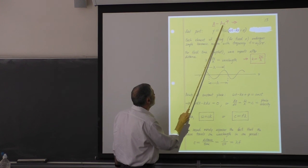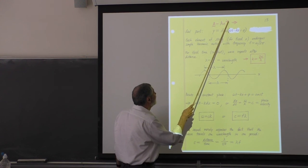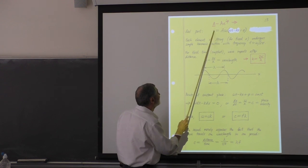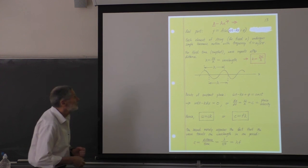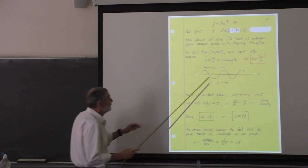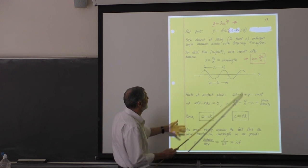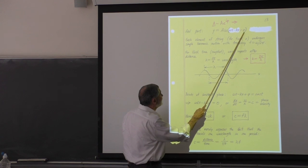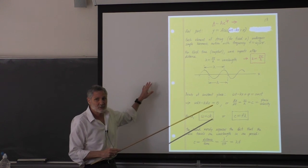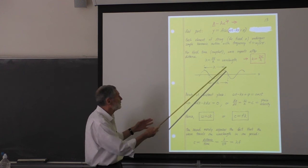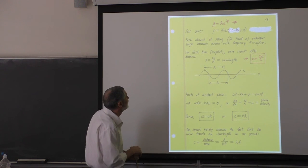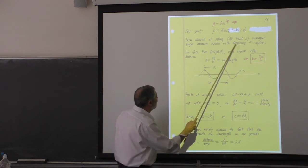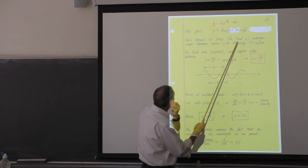We can always write A as some modulus times e to the i phi, where A and phi are constants. So here's the actual wave. The goal here is to determine A and phi for our drive — that's what we're after. This is going to take a little while because we have all these preliminaries to get through. In the steady state, everything has to go at the same frequency, and you can see that in the math.